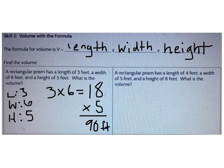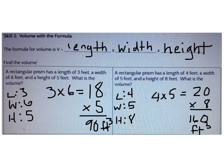Now you try one. A rectangular prism has a length of 4 feet, a width of 5 feet, and a height of 8 feet. The answer is 160 cubic feet. 4 times 5 is 20, and 20 times 8 is 160.